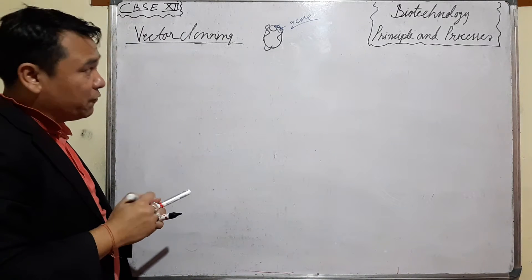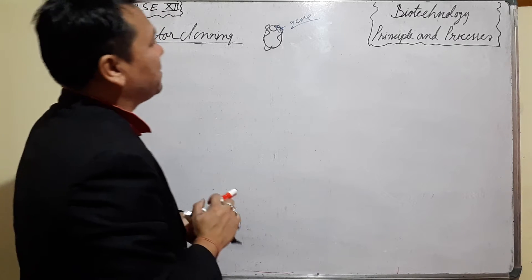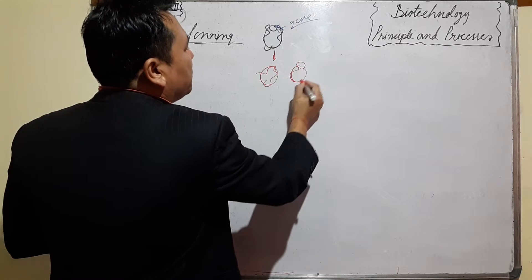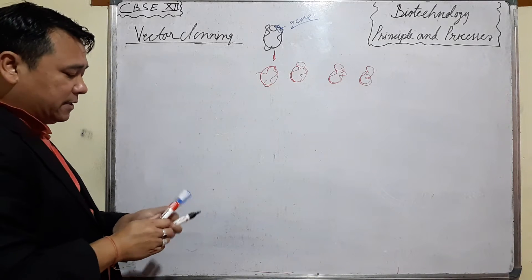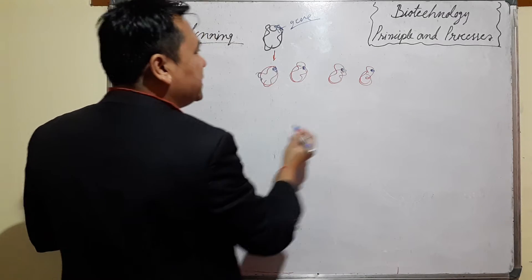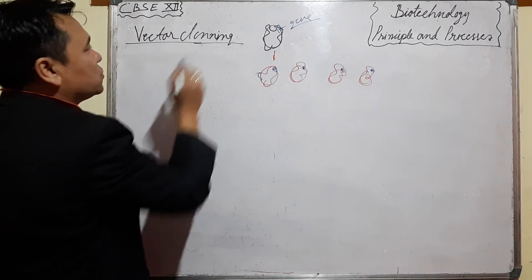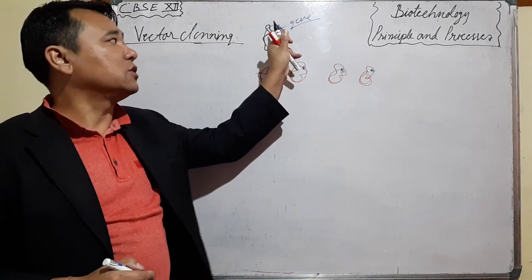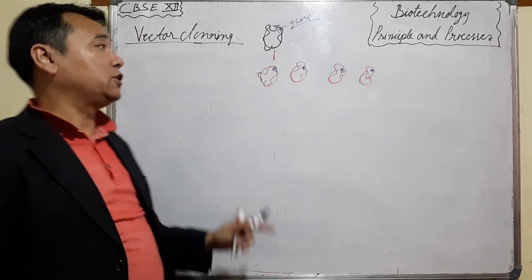So that is a vector. In cloning, using a vector, we will get different copies. We will get many copies of this vector, and you can see there are so many copies of this vector — each containing the foreign gene. These copies are just like clones, and that is why it is called vector cloning. Vector cloning means forming the clones of a vector which contains the foreign gene.